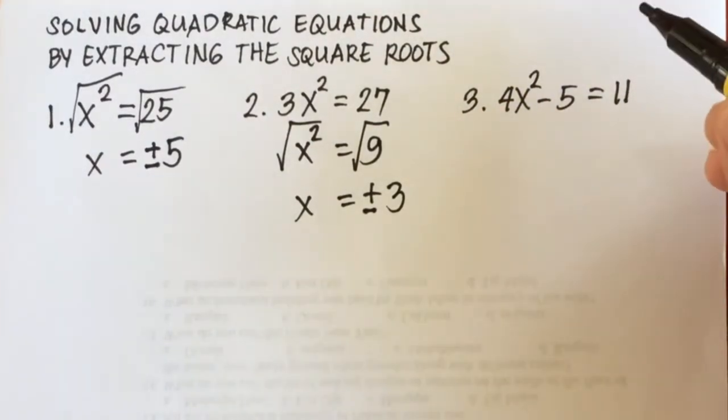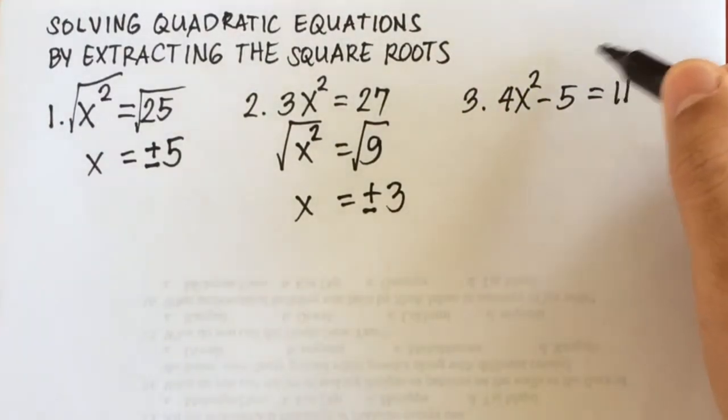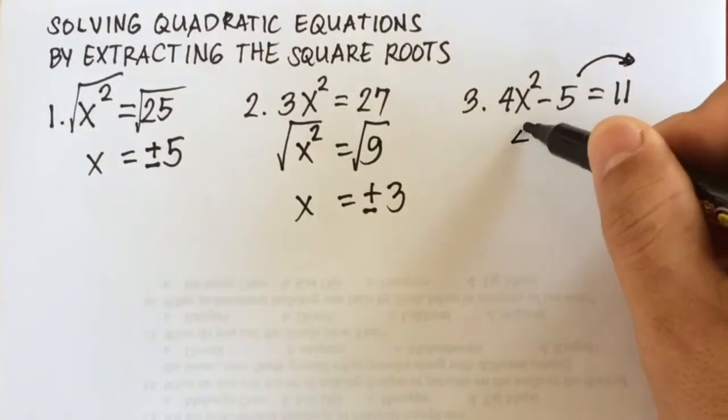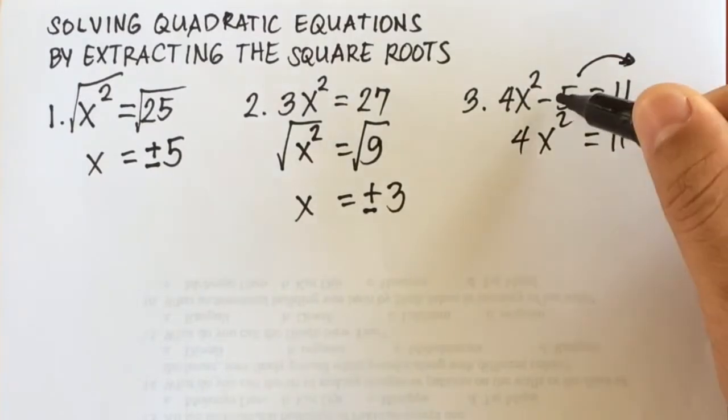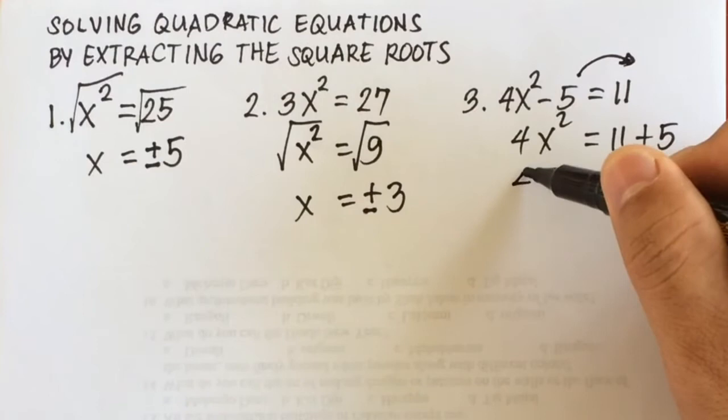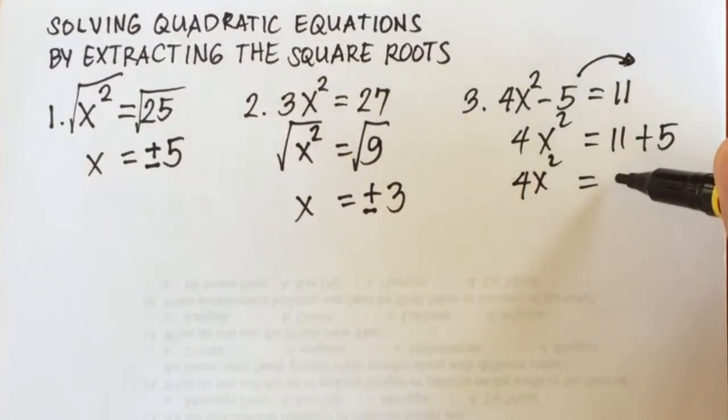For number 3, 4x squared minus 5 equals 11. We're going to transpose negative 5 to the right side. So, we're going to have 4x squared equals 11. Negative 5 will become plus 5. So, we have 4x squared equals 11 plus 5 is 16.